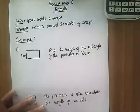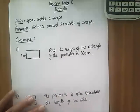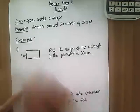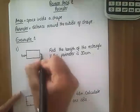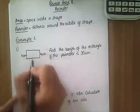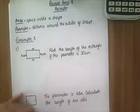Let's kick off with an example. I've got a rectangle here and it says find the length of the rectangle if the perimeter is 30 centimeters. We know this side is 4 centimeters which means this side must be 4 centimeters, and we've got to find these two missing lengths.